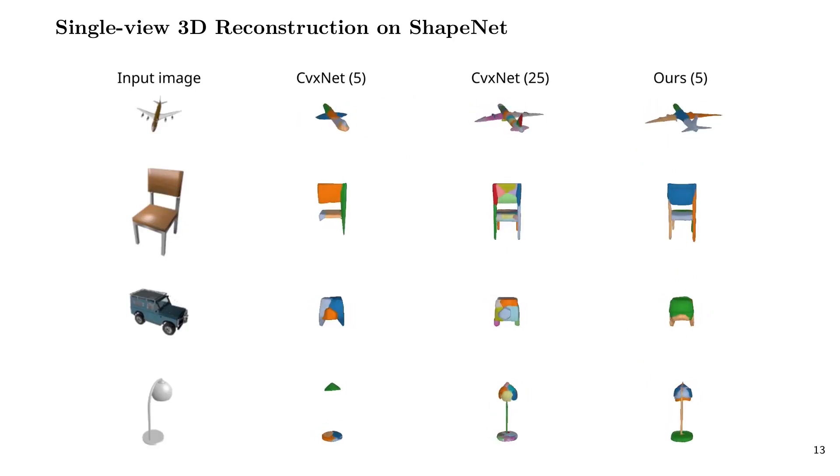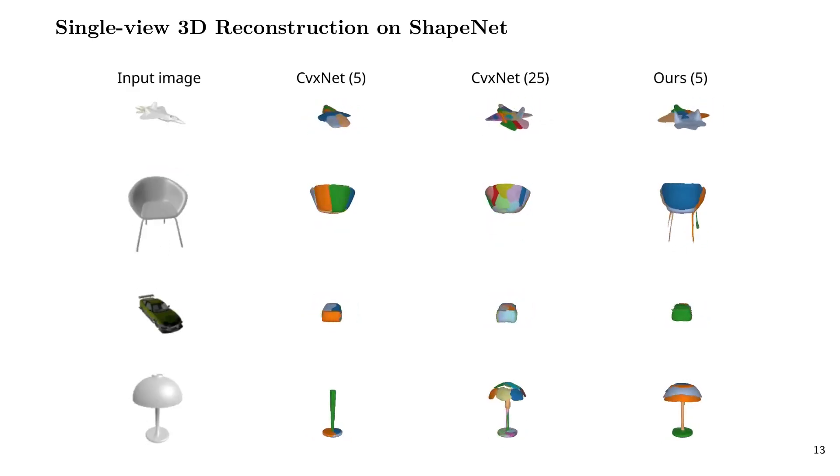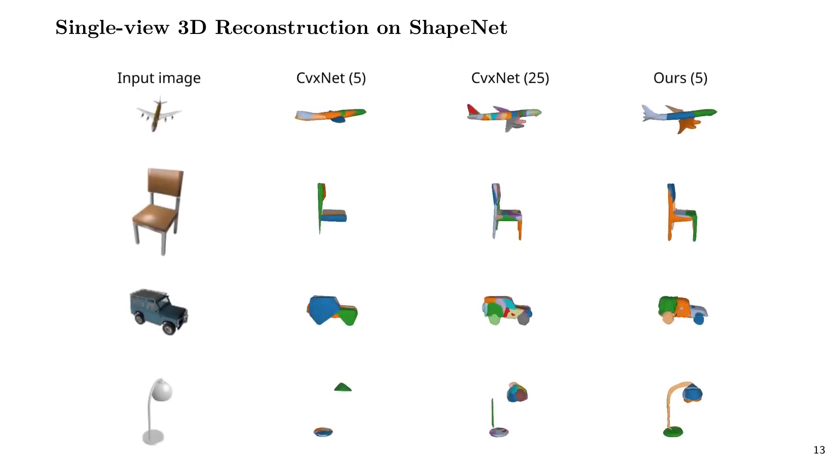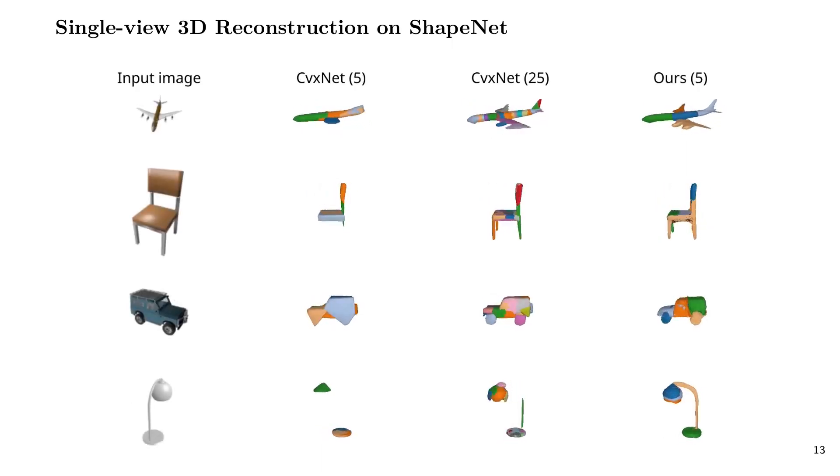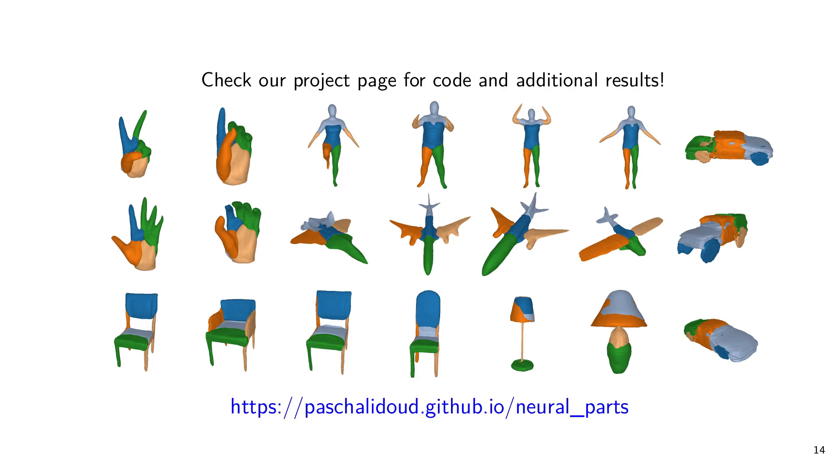We finally validate our model on various ShapeNet objects and observe that it results in more accurate reconstructions than CVXNet with five primitives. When increasing the number of primitives to 25, CVXNet improves in terms of reconstruction quality, but the predicted primitives lack a semantic identity. Thank you very much for your attention. Please check out our webpage for code and additional results.